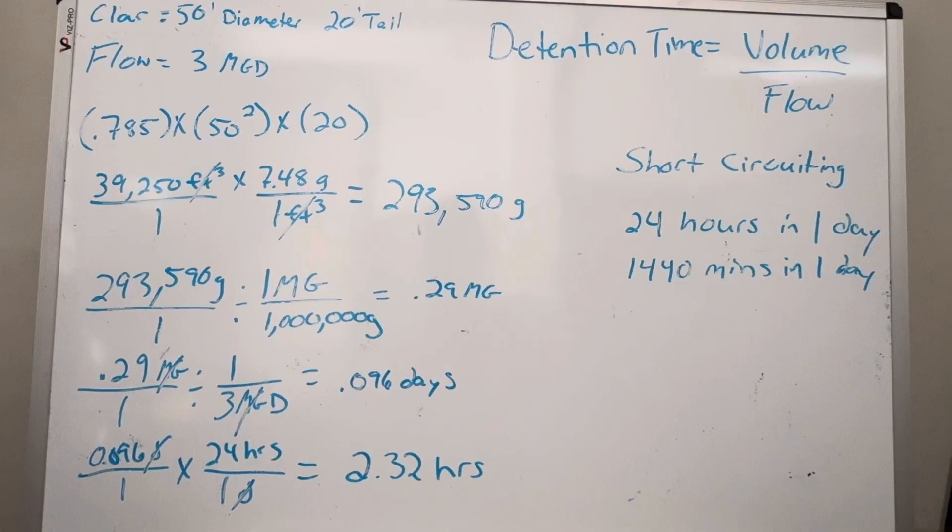Textbook target for a primary clarifier is around two hours, could be less, could be a little more. You don't want too long a detention time though, because things can start getting septic and gross. You want that stuff moving along. You don't want odors forming. You want to get the settleable solids out and out the door, get the primary effluent out the door towards the next biological process.